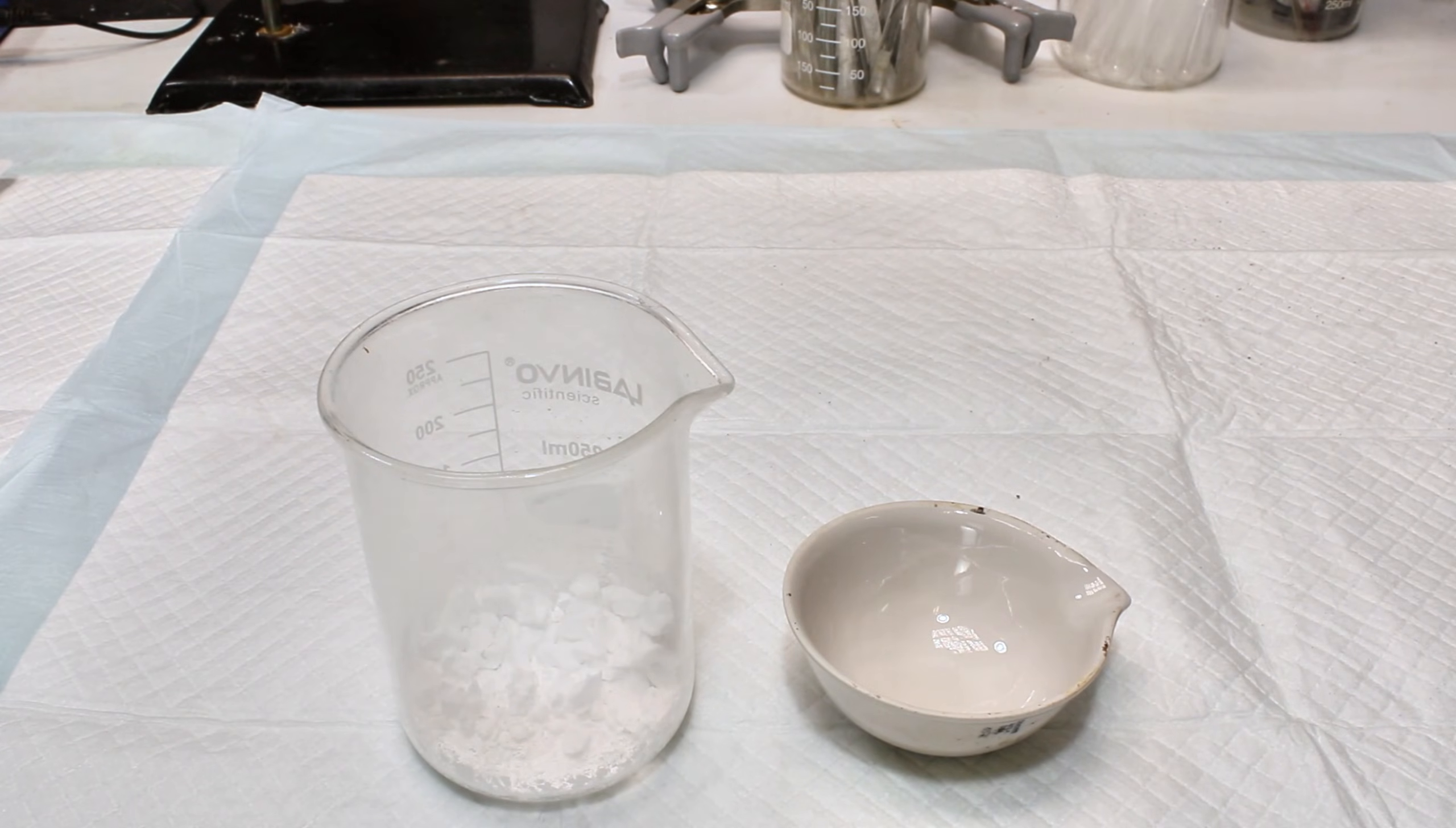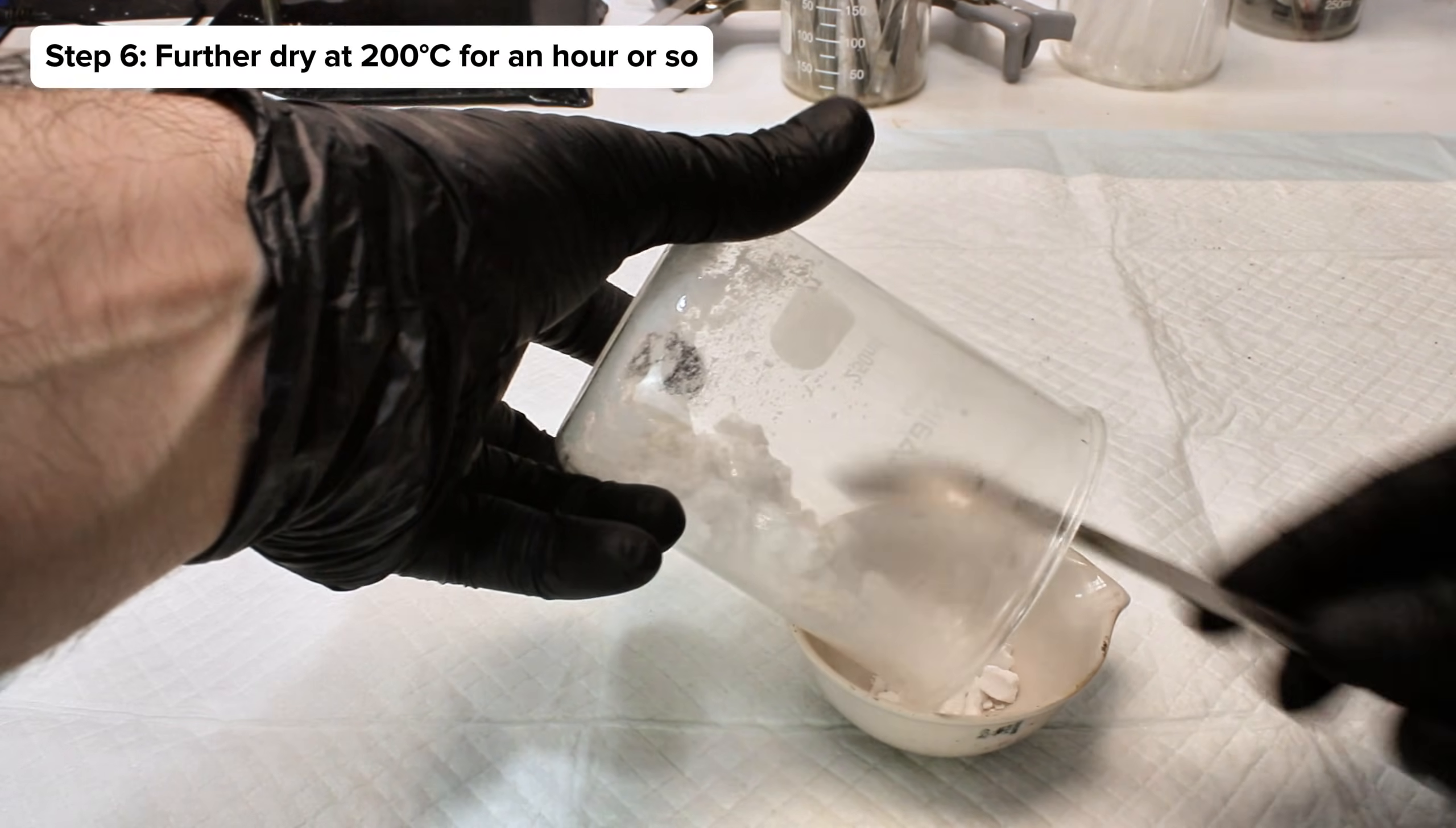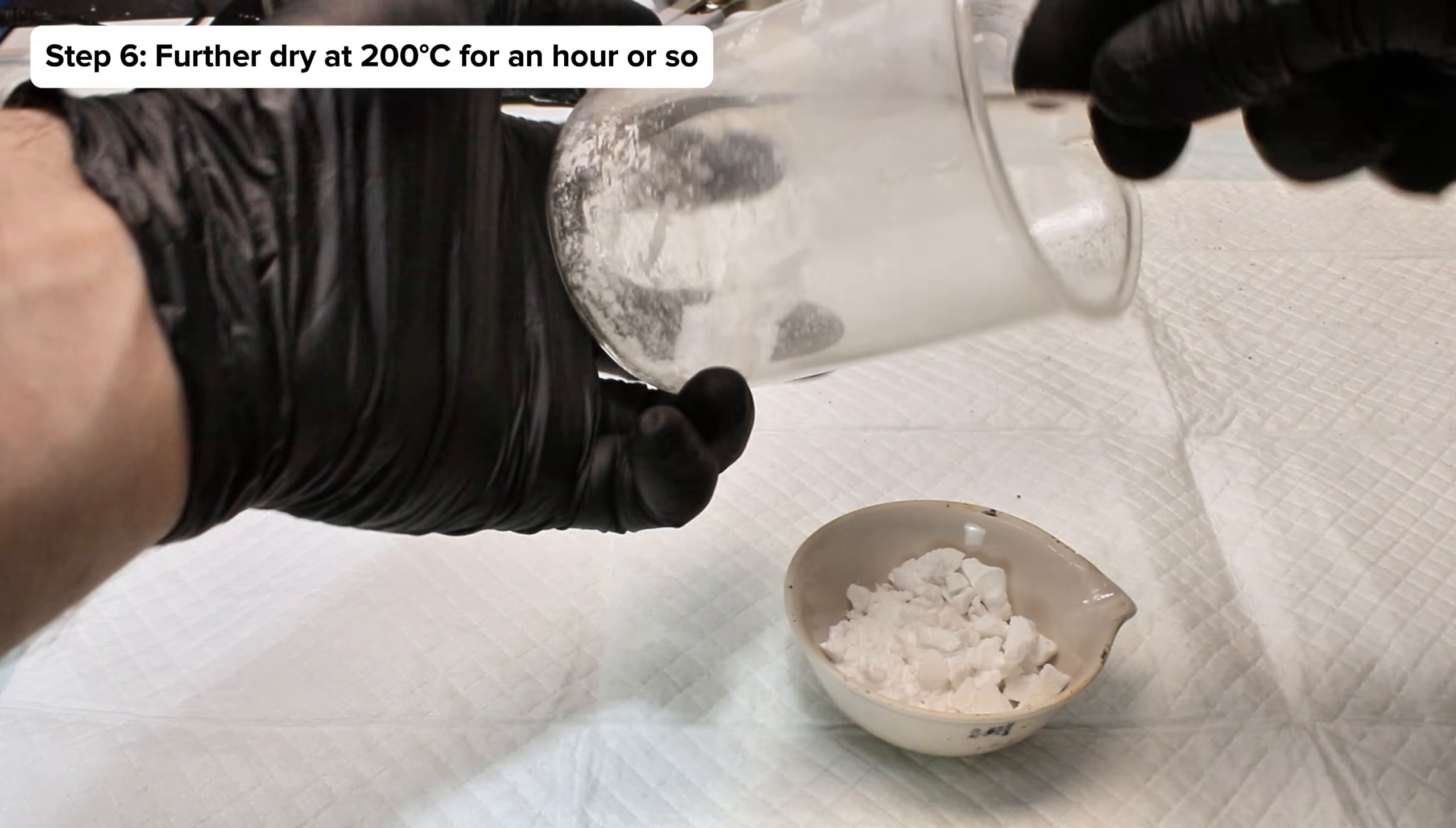Once stirring eventually became difficult, I took the beaker off the heat, allowed it to cool, and then transferred the fused salt mass to a porcelain crucible. This was then placed in my toaster oven and heated at 200 degrees Celsius for a few hours to drive off as much water as possible.